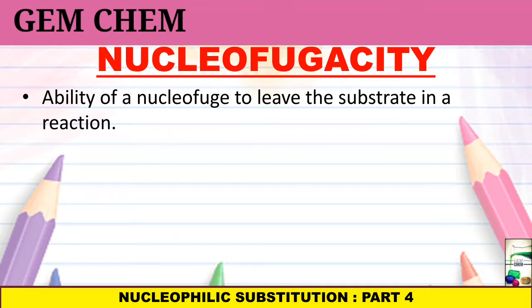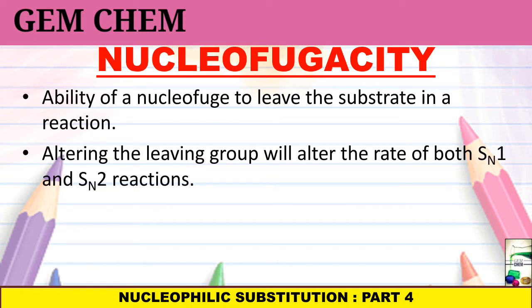You have to always understand that since there is a breakage of bond when the leaving group leaves the substrate, if we try to alter the type of leaving group, the Nucleofugality also differs. As a result, the rate of reaction both in case of SN1 and SN2 reaction gets altered, because this breaking of bond step is involved in the slow rate determining step for both SN1 and SN2 reactions.